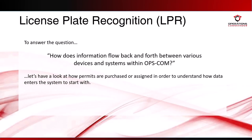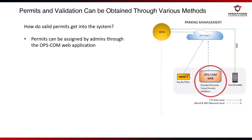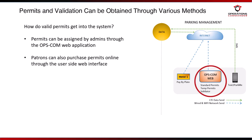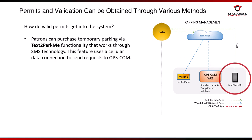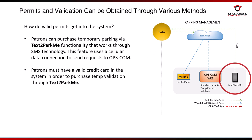Permits can be assigned by admins through the Opscom web application. Patrons can also purchase permits online through the user-side interface. Patrons can purchase temporary parking via the Text2ParkMe functionality that works through SMS technology. This feature uses a cellular data connection to send requests to Opscom. Patrons must have a valid credit card in the system to purchase temporary validation through Text2ParkMe. Permits can also be purchased at pay-by-plate terminals, and the record of these purchases is sent into the system via wired network internet connections.